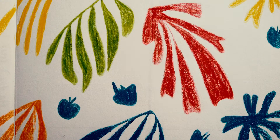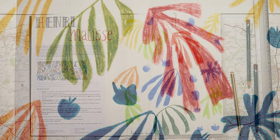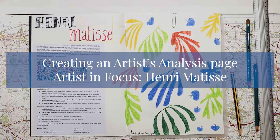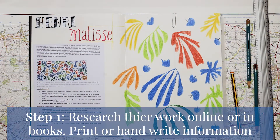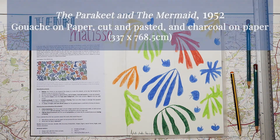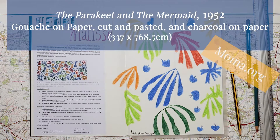Today we'll be having a look at creating an artist page, or if you like, an analysis of an artist. My chosen artist is Henri Matisse and I have first of all looked at a little bit of background information on his particular artwork that I'm interested in. The artwork is the Parakeet and the Mermaid, made in 1952 — gouache on paper, cut and pasted, and charcoal on paper. It's actually from the museum in Amsterdam but this particular image I've got from the Museum of Modern Art, so moma.org.